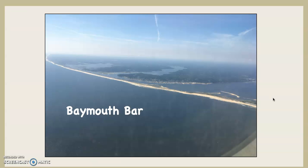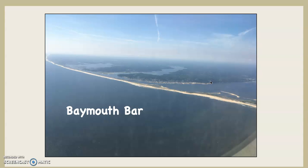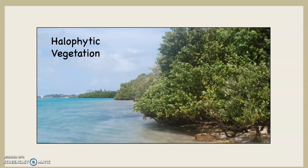This is a baymouth bar. You can see the way the bays are back here and the beach stretches along, completely enclosing this back bay area. Typically, as this fills in, the type of vegetation that grows there tends to be halophytic vegetation — like this mangrove swamp. Halophytic vegetation means that the vegetation is salt tolerant. This comes from halite, which is salt.